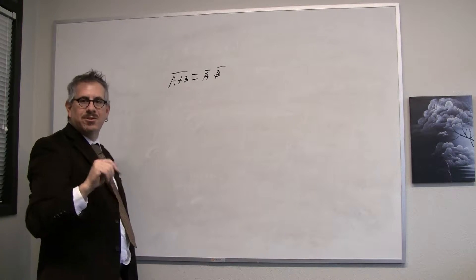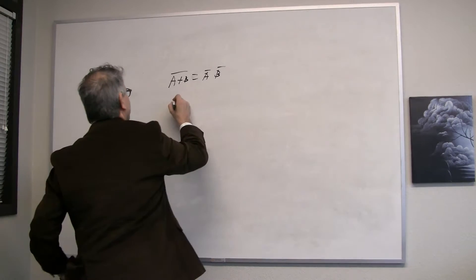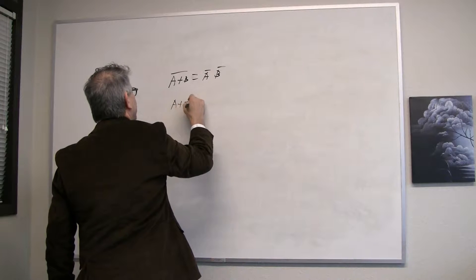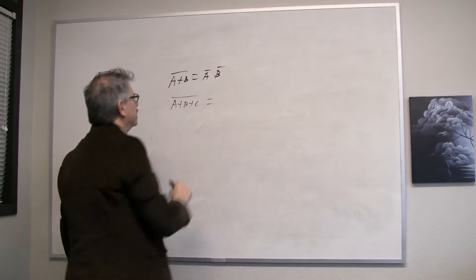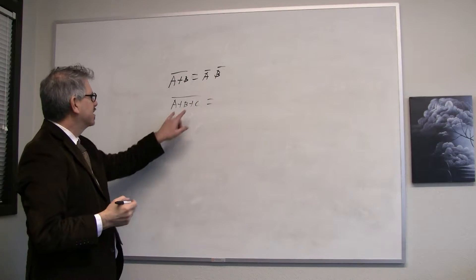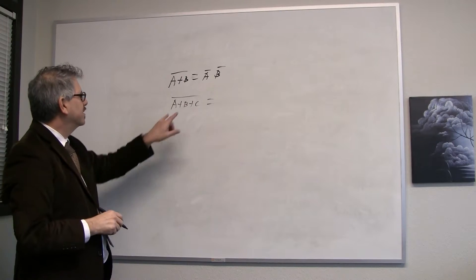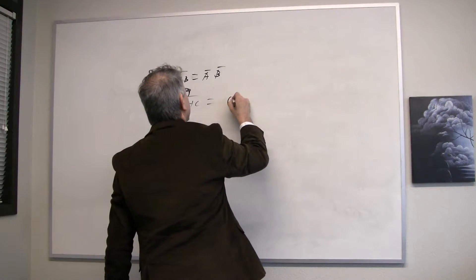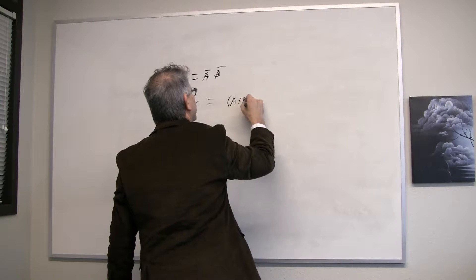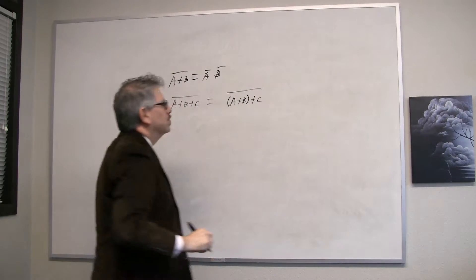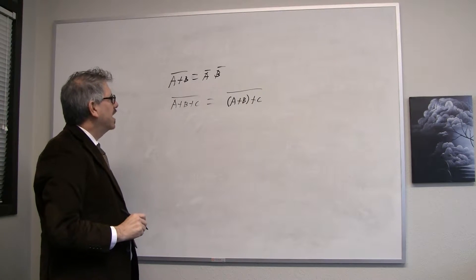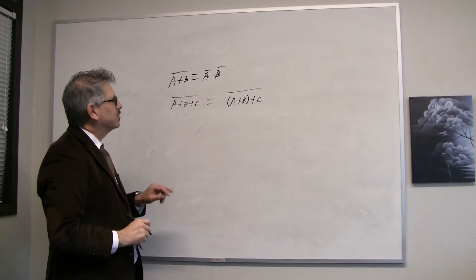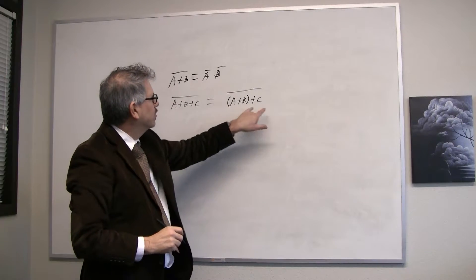Suppose we want a three variable version of De Morgan's Theorem. We can say A or B or C bar. And we know that since these operations are associative, this is the same thing as A or B, ORed with C, bar. And now we're set up for the two variable De Morgan's where we have one thing ORed with another, and then we're complementing that.